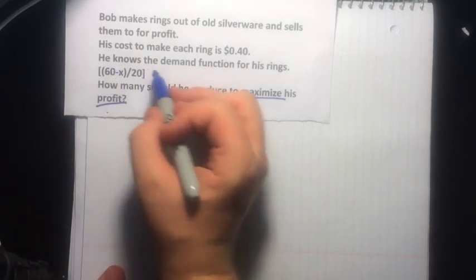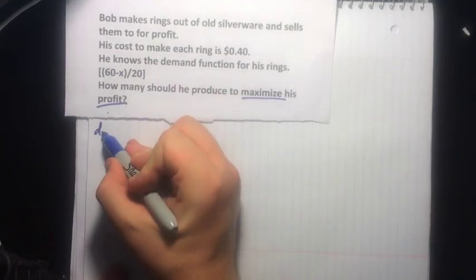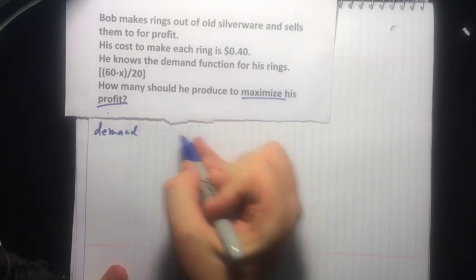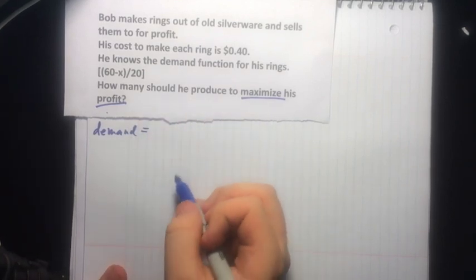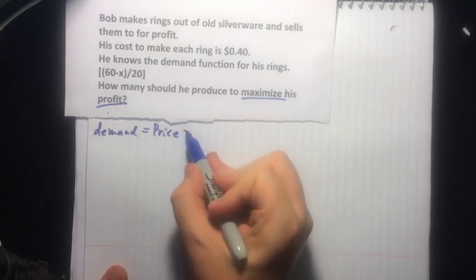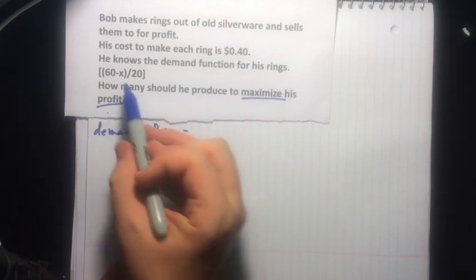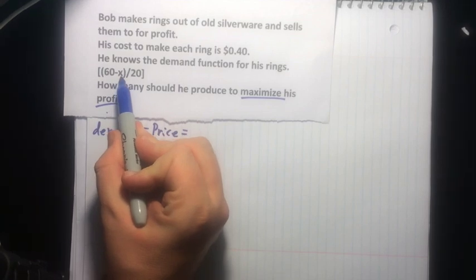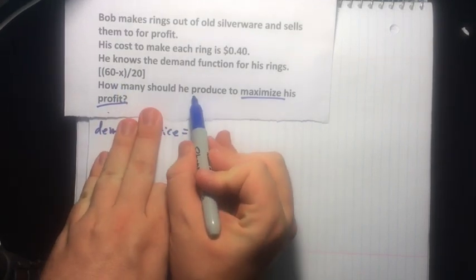So let's talk about what we already know: our demand function. If you know much about economics, that's actually what sets your price. That's our price, that's what people are willing to pay. And it's a function of x, which is how many Bob produces.